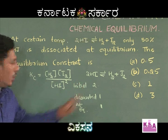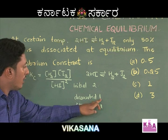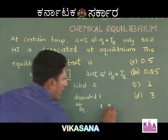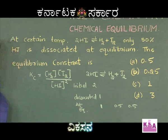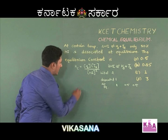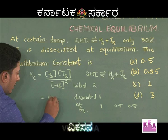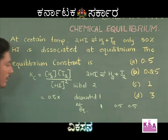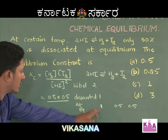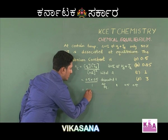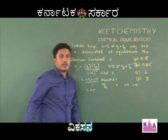According to the equation, 2HI gives 1H₂ plus 1I₂. This clearly indicates that if 1 mole of HI dissociates, then 0.5 mole of H₂ and 0.5 mole of I₂ will be formed. Hence, Kc equals 0.5 × 0.5 divided by 1² = 0.25. Hence, option B is the right answer.